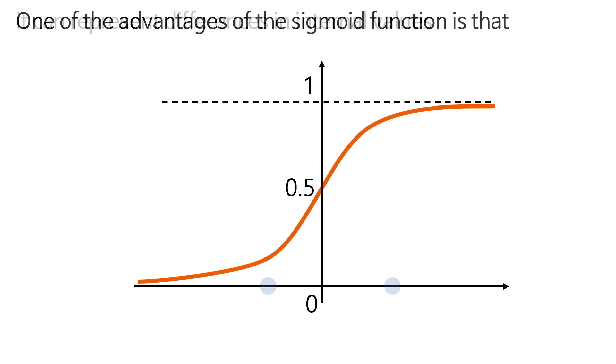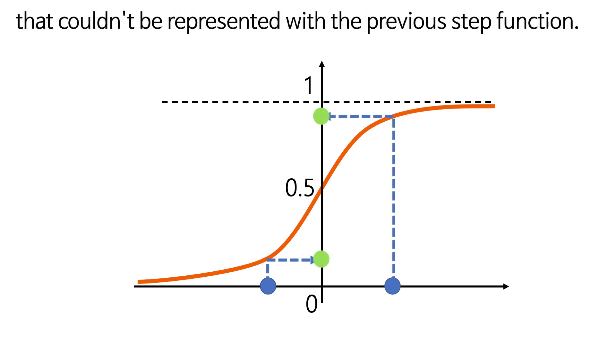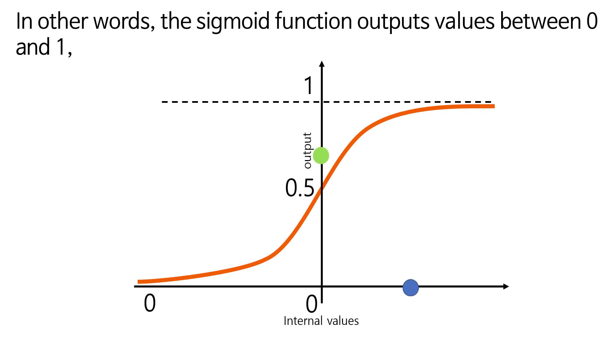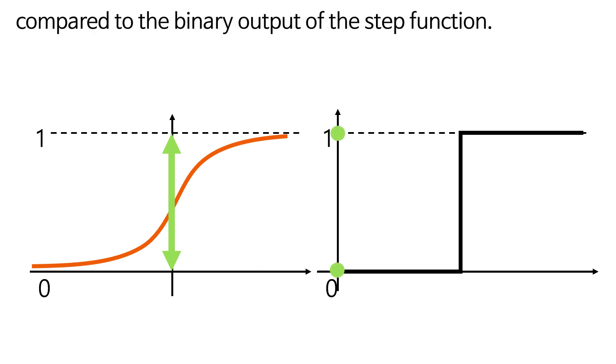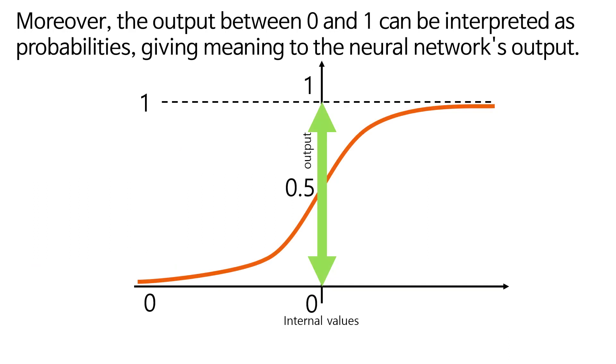One of the advantages of the sigmoid function is that it can represent differences in internal values that couldn't be represented with the previous step function. In other words, the sigmoid function outputs values between zero and one, allowing for a wider range of error calculations compared to the binary output of the step function. Moreover, the output between zero and one can be interpreted as probabilities, giving meaning to the neural network's output.